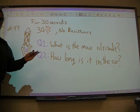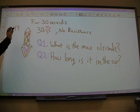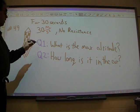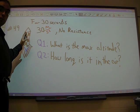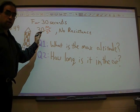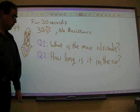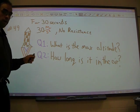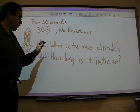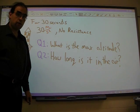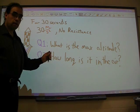This is problem 49 in the book. For 30 seconds, this rocket is accelerating from Earth at a rate of 30 meters per second squared. We're not taking account air resistance. We have two questions we're going to find out the answer to: What is the maximum altitude? And how long is it in the air?